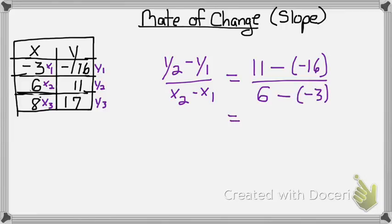And then, when I do 11 minus a negative 16, I get 27. And when I do 6 minus a negative 3, I get 9. And 27 divided by 9 equals 3. So that is my rate of change, or my slope.